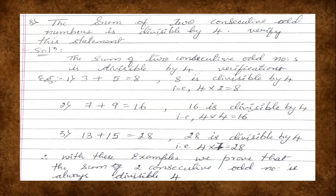3 + 5 = 8. Is 8 divisible by 4? Yes — 4 × 2 = 8. So 3 + 5 = 8 is divisible by 4. We have verified with this example. For the second example, we take another two consecutive odd numbers: 7 and 9. 7 + 9 = 16. Is 16 divisible by 4? Yes — 4 × 4 = 16. The sum 16 is divisible by 4.